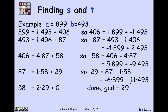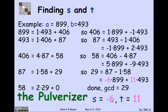Now we win: dividing 58 by 29 gives remainder 0, so the GCD of 58 and 29 is 29. That means the GCD is 29, and we've found the coefficients S = −6 and T = 11. This process was discovered in medieval India and was known as the pulverizer — at least that's the English translation.